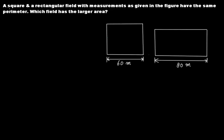The first problem says a square and a rectangular field with measurements as given in the figure have the same perimeter. These two figures have the same perimeter. Which field has a larger area? You have to tell, even though the perimeters are the same, which of these two fields has the larger area.